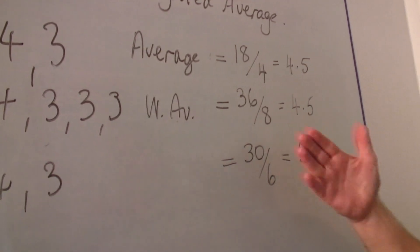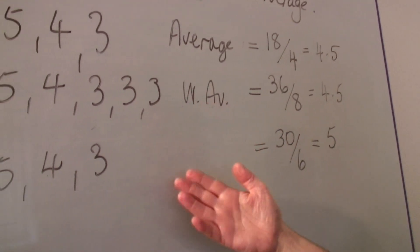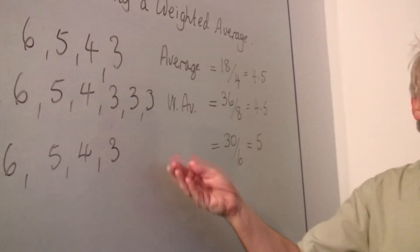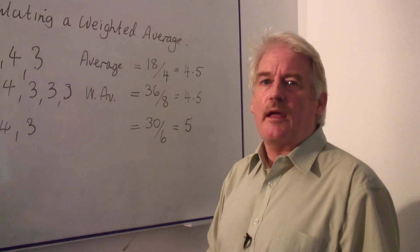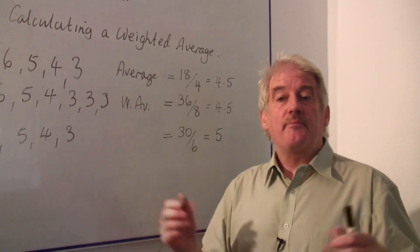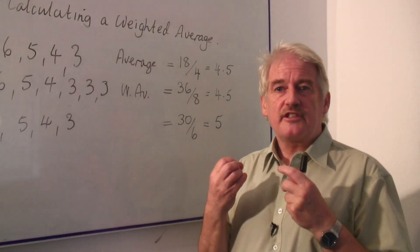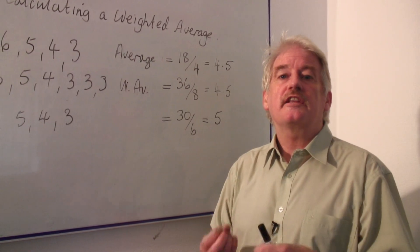So the weighted average takes into account the number of objects or how strong that value is represented in the set of numbers that you've got. So you have to take account of how many times it occurs.